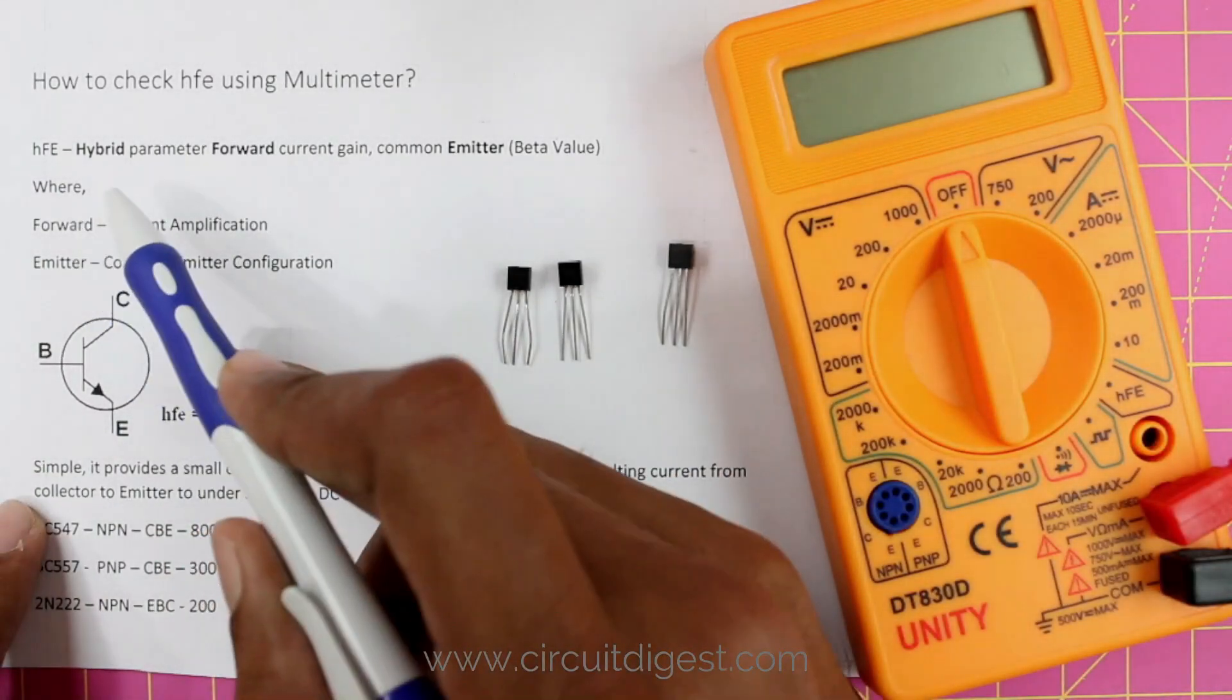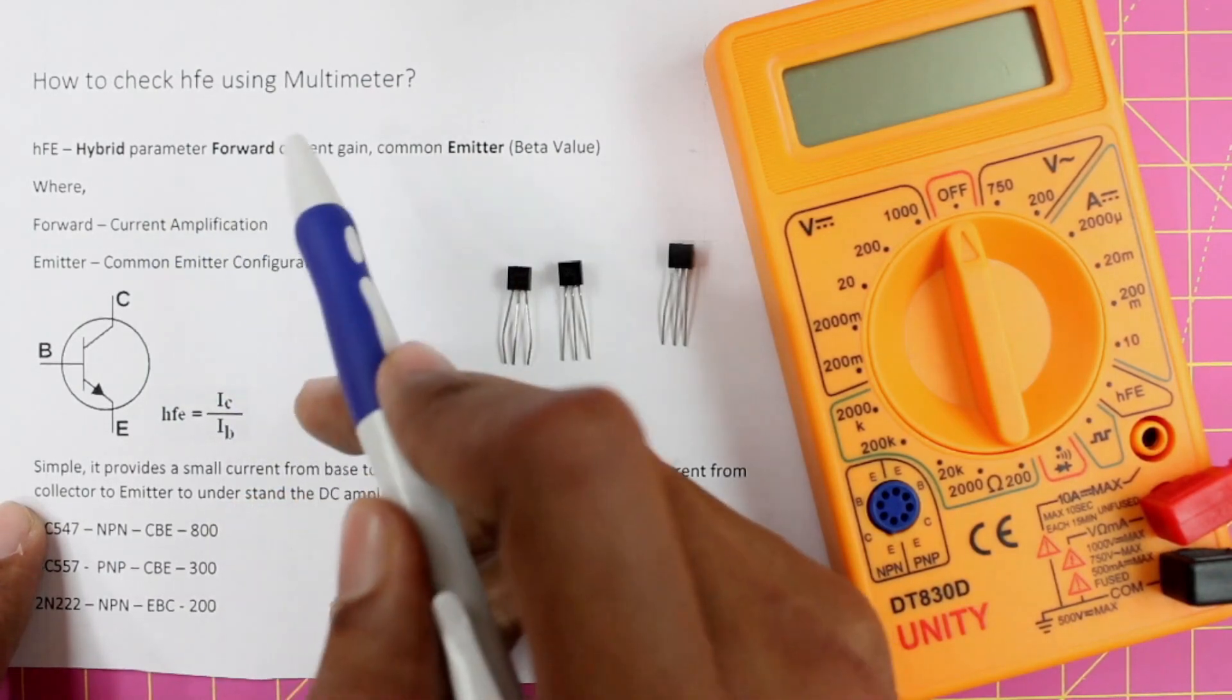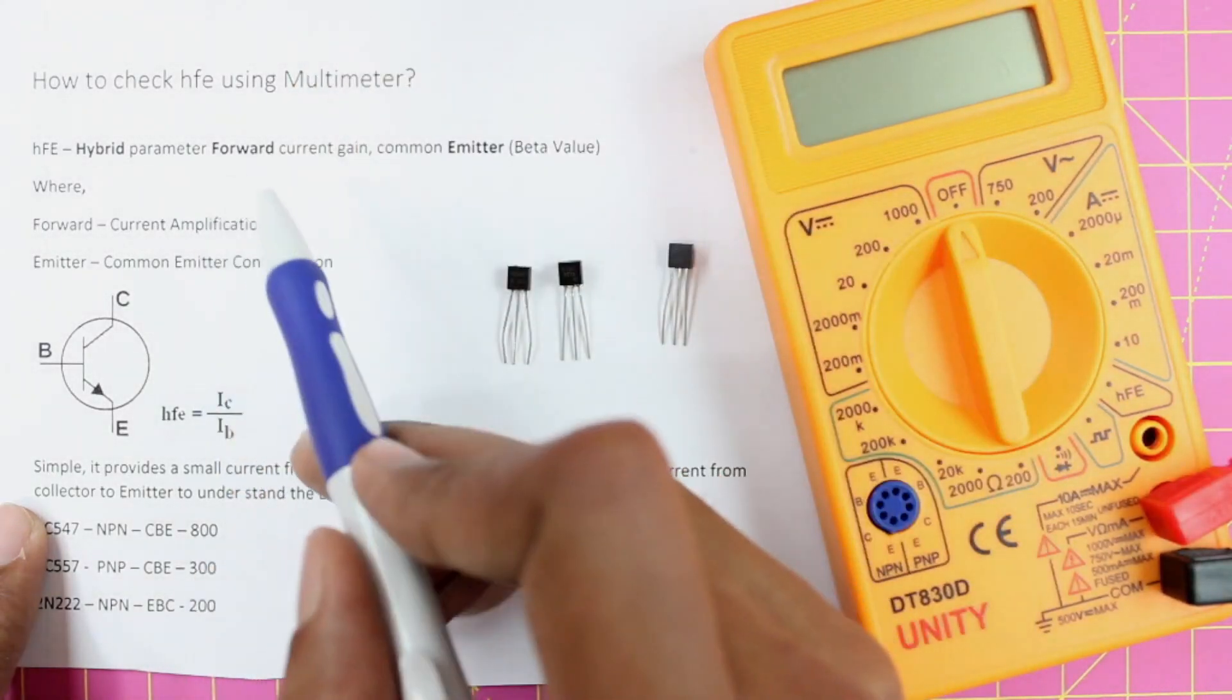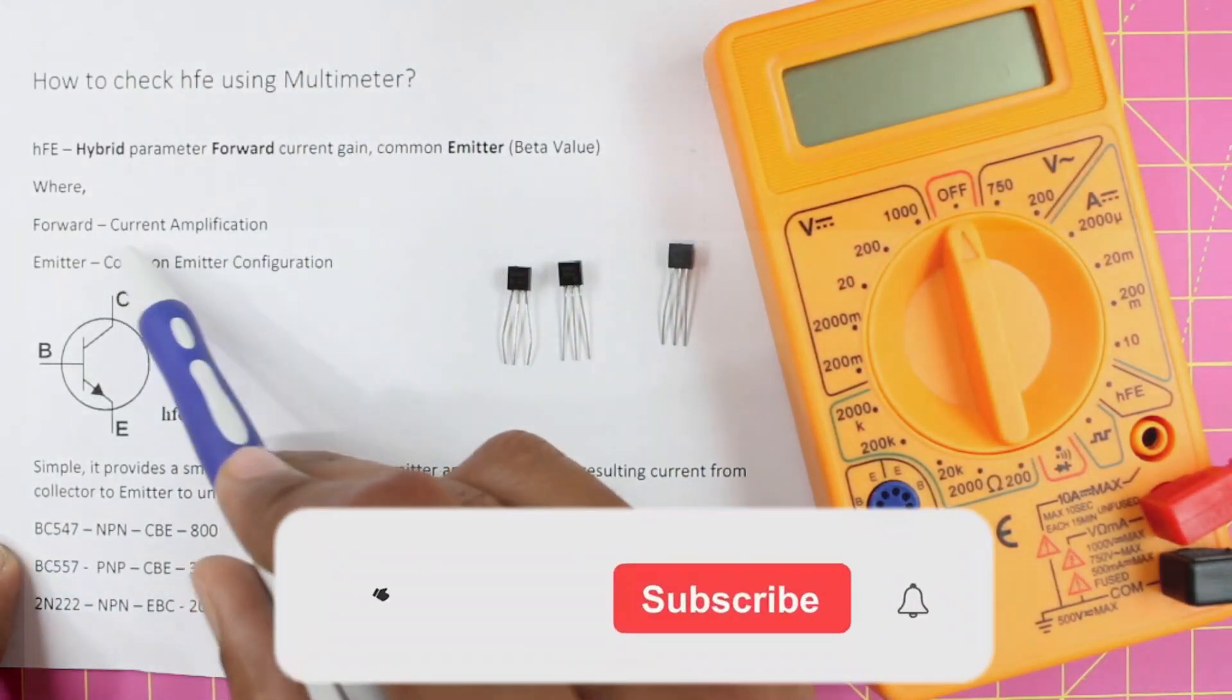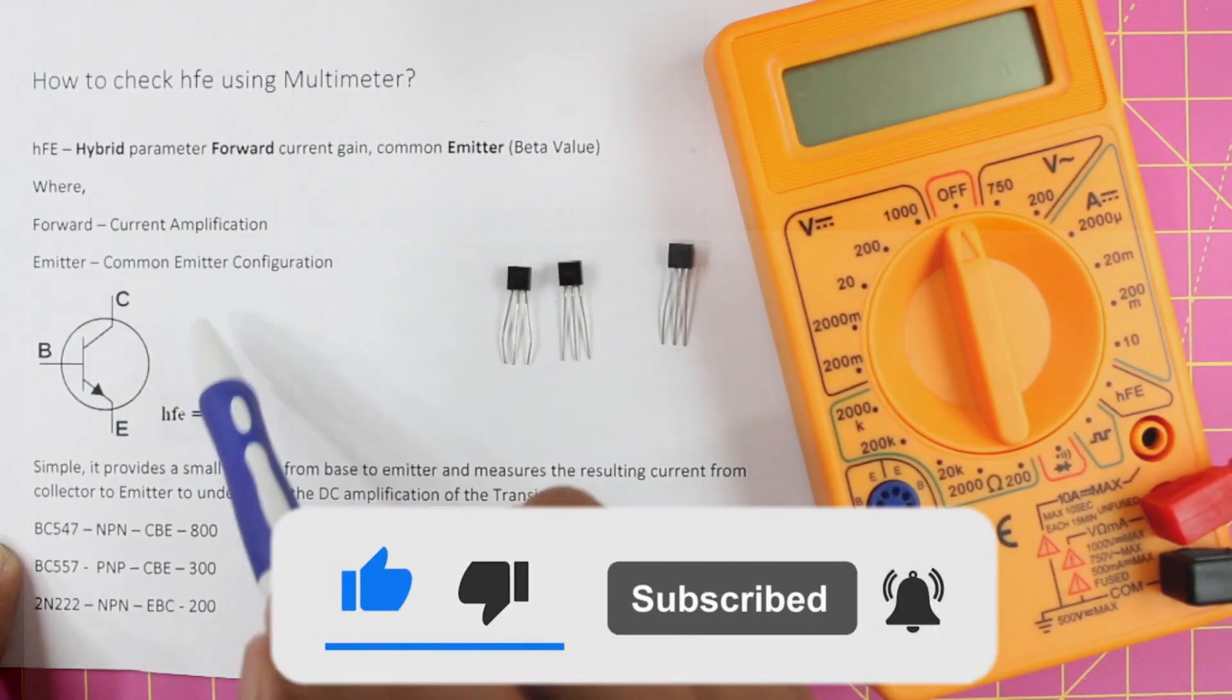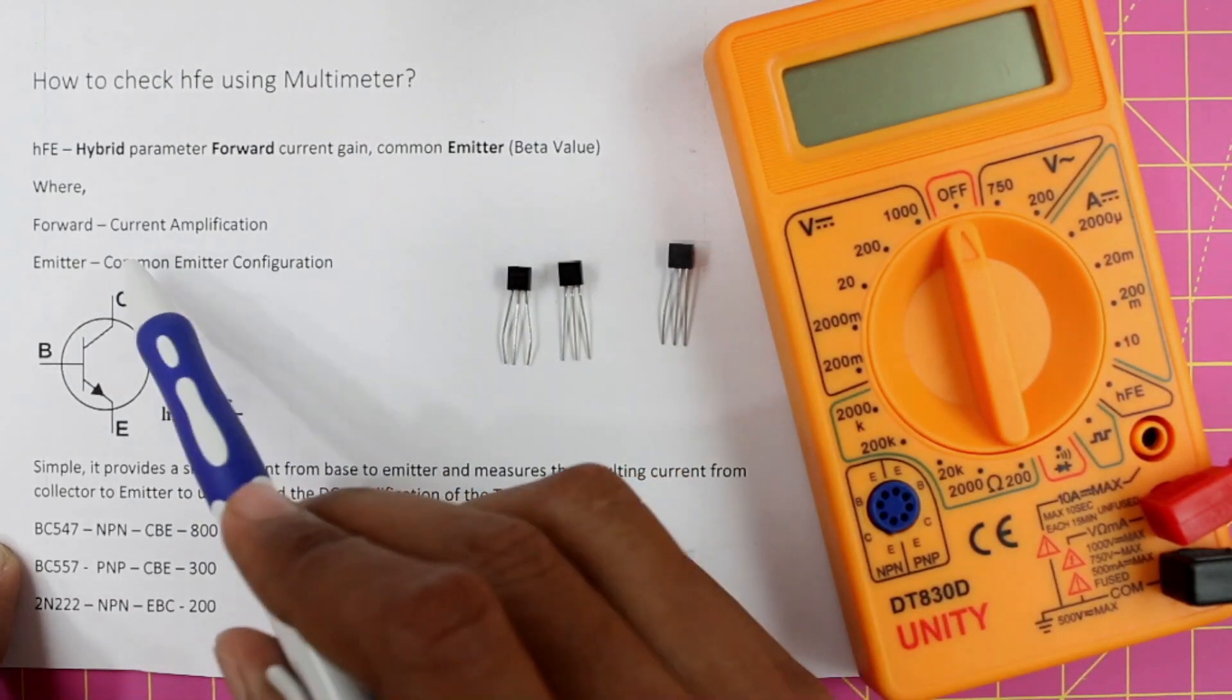It indicates hybrid parameter forward current gain common emitter. Now I'm not going to get into the theory of it, but to give you a perspective, the term forward means it deals with current amplification, and the term common emitter means that we are going to test the transistor in common emitter configuration.